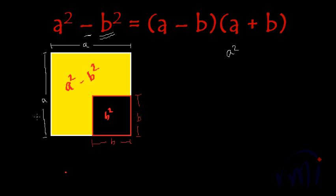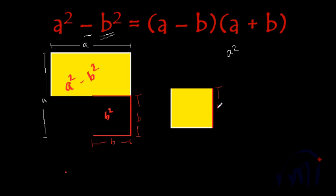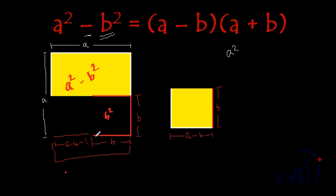So this much is a square minus b square. And if I cut this figure from here, this much will be equal to b, and this much will be equal to a minus b. This portion belonged over here, where this much is b and the whole was a, so this much portion will be a minus b.